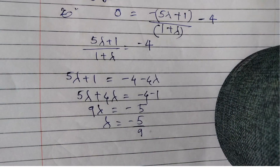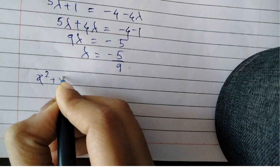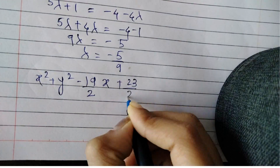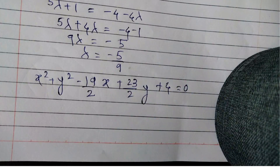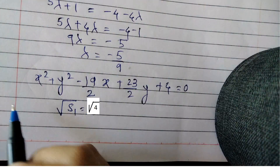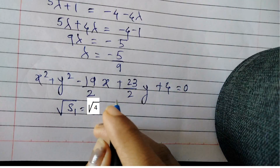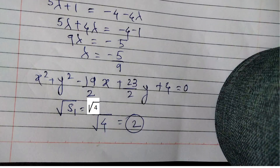Substituting lambda = −5/9 into the circle equation gives: x² + y² − (19/2)x + (23/2)y + 4 = 0. Now to find the length of the tangent from the origin, we use root of S₁. Since the origin has coordinates (0, 0), only the constant term remains, giving root of 4 = 2. Hence the length of the tangent is 2.